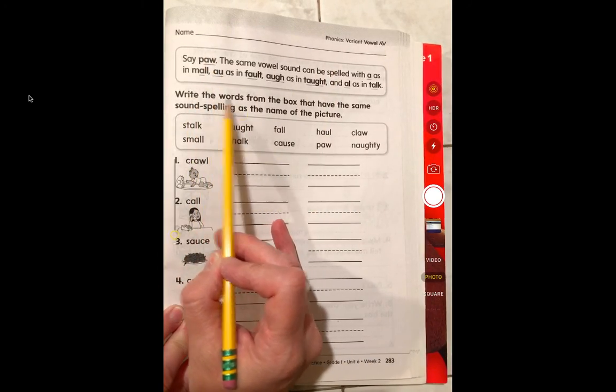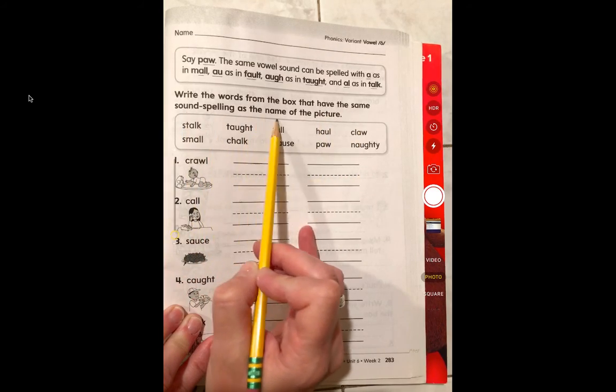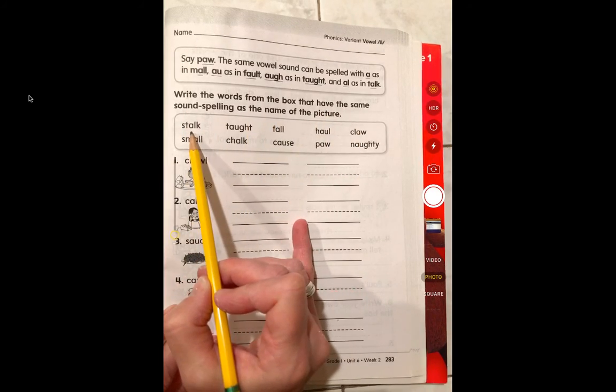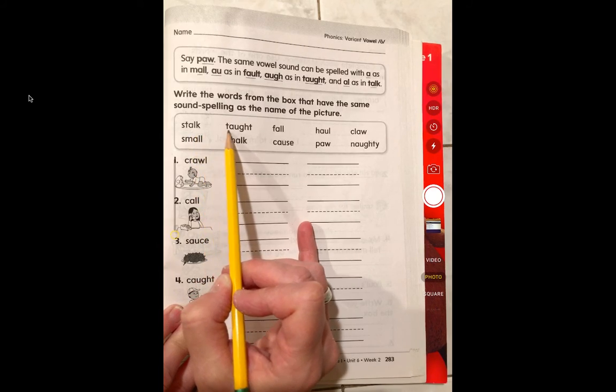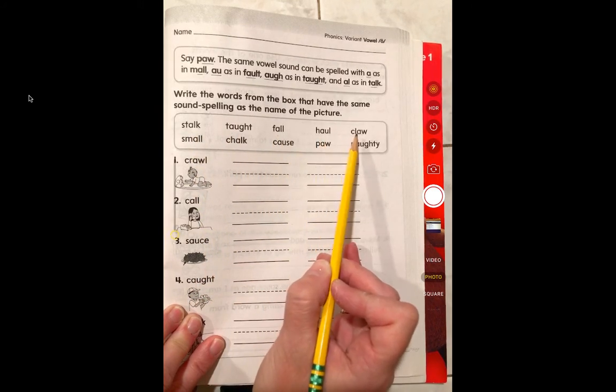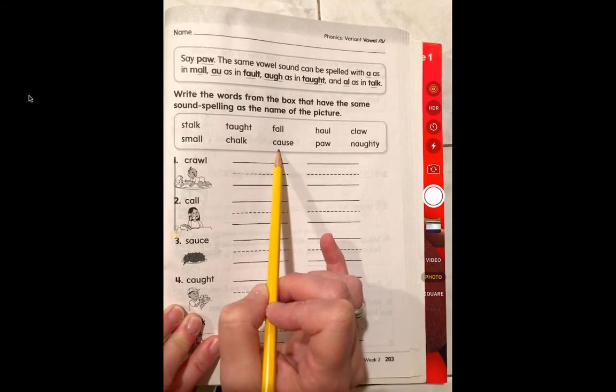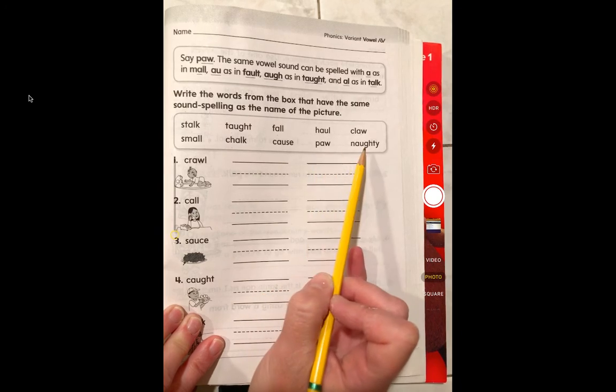So it says write the words from the box that have the same sound spelling as the name of the picture. So these words are stock, tot, fall, haul, claw, small, chuck, cause, paw, and naughty.